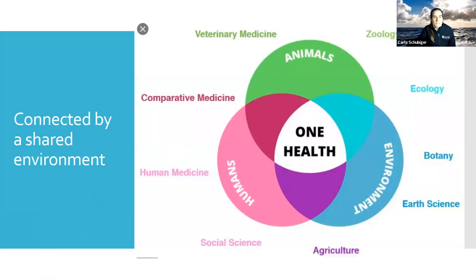Like most veterinary medicine colleges, my college does research that can be summarized under the One Health umbrella. The One Health paradigm is the interface of human, animal, and environmental health, and it shows that we are tightly connected by sharing the same environments. Almost every research field can contribute to that common goal of One Health.